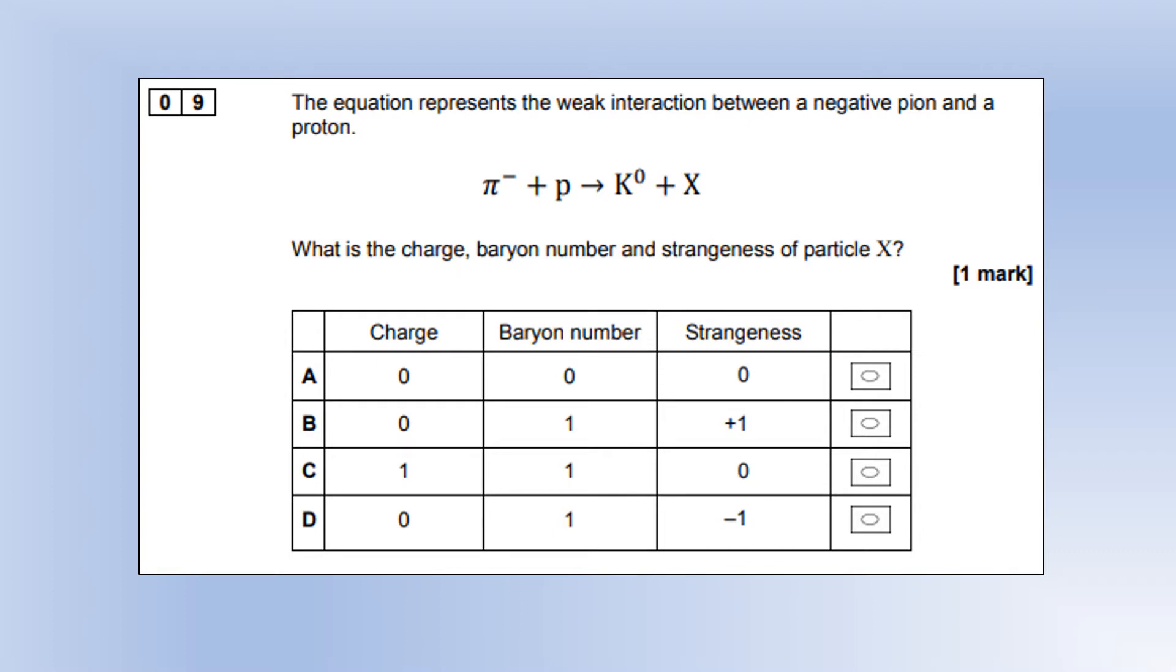The equation represents the weak interaction between a negative pion and a proton. What is the charge, baryon number, and strangeness of particle X? On the left-hand side, we've got a total charge of zero. A kaon is neutral, so the particle we're producing must be neutral as well, so we can get rid of C. On the left, we've got a pion and a baryon, so baryon number is 1. On the right, we've got baryon number 0, so we need to produce a baryon, eliminating option A. Unfortunately, we can't eliminate either of the last two options, which is why this question was removed when this was actually done as an exam.